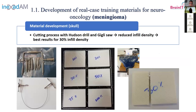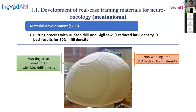Students are going to use hand tools like a drill, so we tested different infill densities to see which was most appropriate for the cutting process. Finally, we chose 30% infill density with the Smart EP filament for the working area. The non-working area of the skull used standard PLA with 20% infill density.